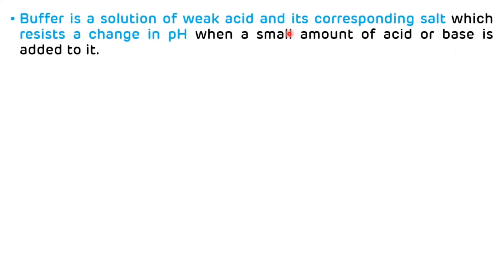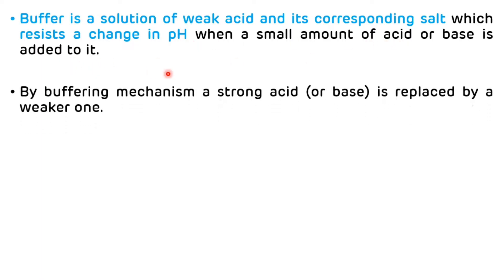Now we will see the definition of buffer. The buffer is a solution of a weak acid and its corresponding salt which resists a change in pH when a small amount of acid or base is added to it. By the buffering mechanism, we can convert a strong acid or strong base to a weaker one.